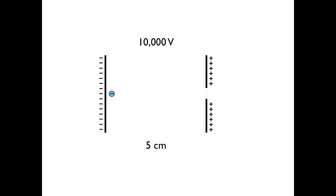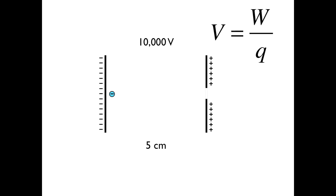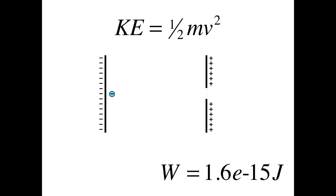We could do this another way too. Taking the original situation of the electron in the capacitor, we can start with the fact that it began with potential energy, and that potential energy is converting into kinetic energy. We start with the equation voltage equals W over q, where W is the potential energy of the electron. We calculate this to be 1.6 × 10⁻¹⁵ joules, set that equal to the kinetic energy using the mass of the electron, and we get exactly the same answer — two different methods of finding the speed of the electron after it's been accelerated by an electric field.